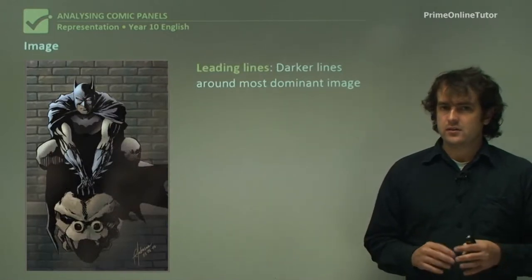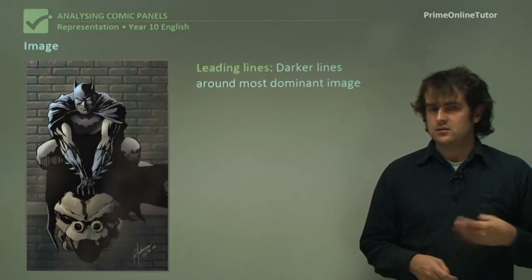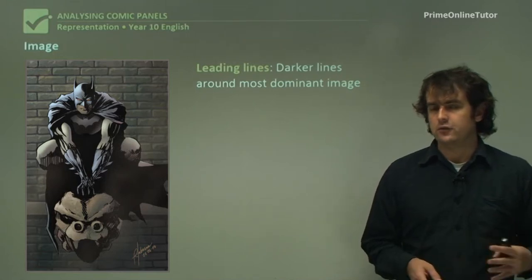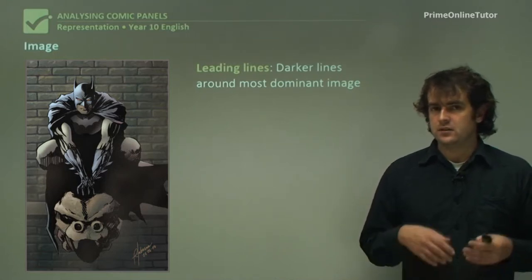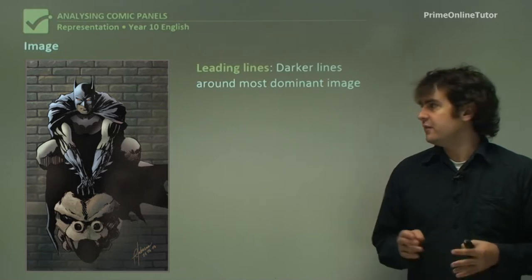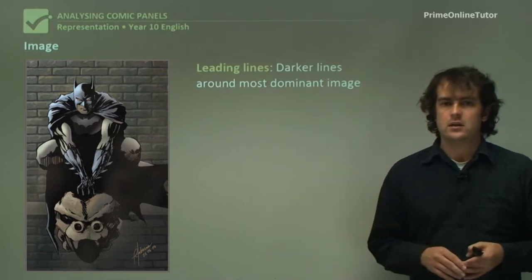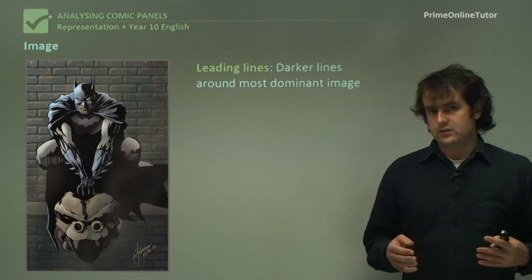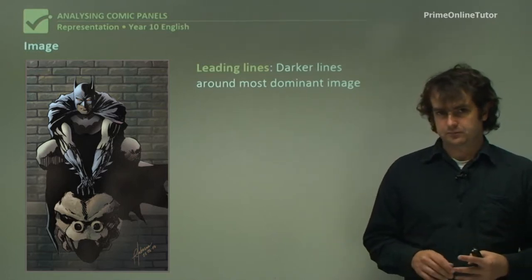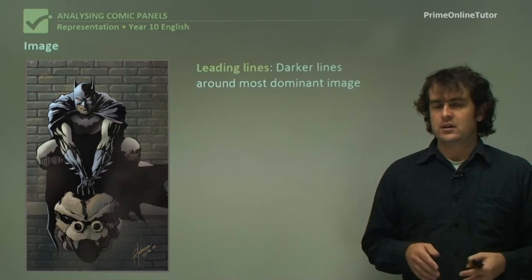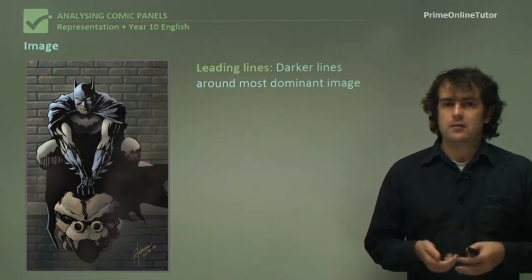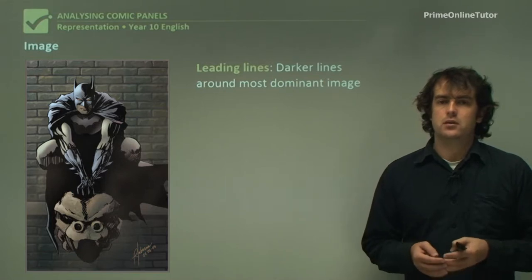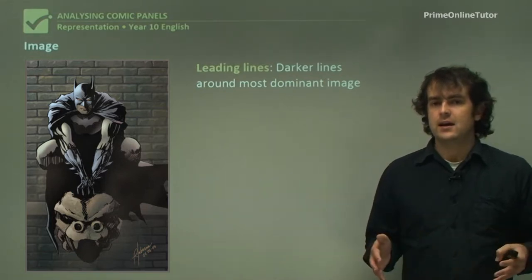Image is the next thing we're going to look at. Aside from what you'll be looking at in advertising or other forms of artwork, there are some different techniques you'll be looking at in comic books. As opposed to vectors, you'll be looking more at leading lines — very dark outlines which are used to highlight a certain image. Because most comics are hand drawn, they are able to arrange the way that the artwork is drawn to make something stand out.